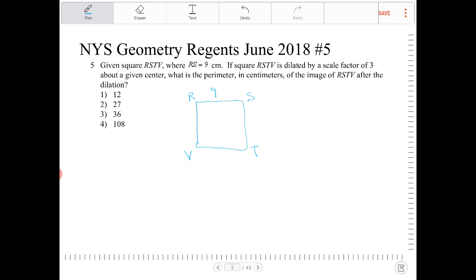If square RSTV is dilated by a scale factor of 3 about a given center, what is the perimeter in centimeters of the image of RSTV after the dilation?